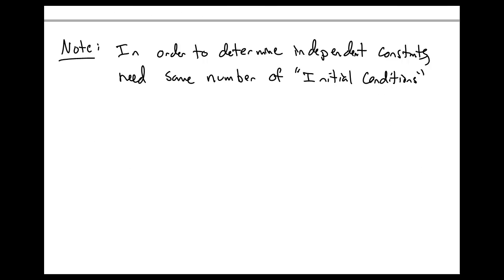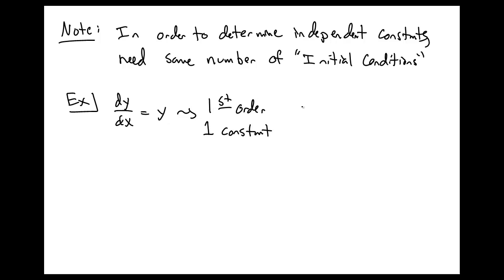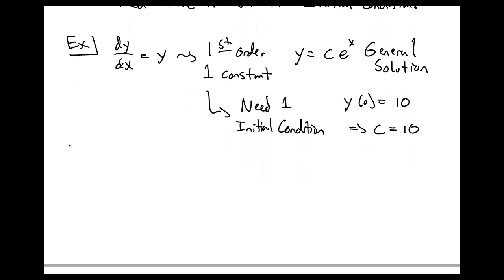As an example, with the first order equation dy/dx equal to y — it's first order, so it has one constant — the general solution is y equal to ce^x. Since there's one constant, we need one initial condition. In particular, if we impose the initial condition that y is 10 at x equal to 0, then our constant c is just 10. That determines our constant.